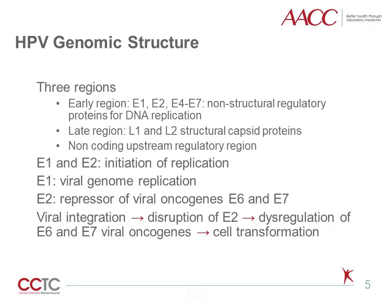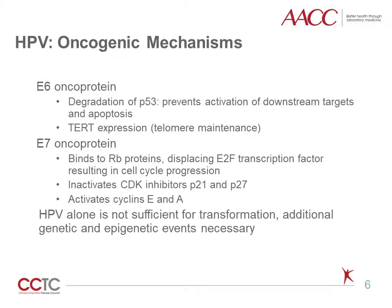The replication is initiated by E1 and E2. While the basic function of E1 is viral replication, E2 functions as a repressor of viral oncogenes E6 and E7. Persistent HPV infections of the high-risk type eventually result in viral integration that disrupts the functioning of E2 protein, which in turn dysregulates the viral oncogenes E6 and E7 to initiate cellular transformation. The mechanism of action of E6 oncoprotein is through degradation of P53, which prevents activation of downstream targets and apoptosis, and overexpression of TERT that maintains telomere length and prevents cell death.